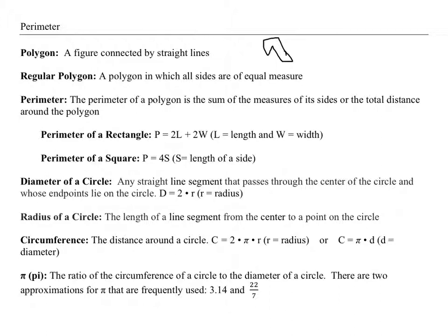These are some formulas that will be on your formula sheet. The perimeter of a rectangle is P = 2L plus 2W, which you probably get because there's two L's and two W's. Sometimes I don't even use the formula, I just add up all the sides. And the perimeter of a square is four times the length of the side, because in a square all sides are the same.